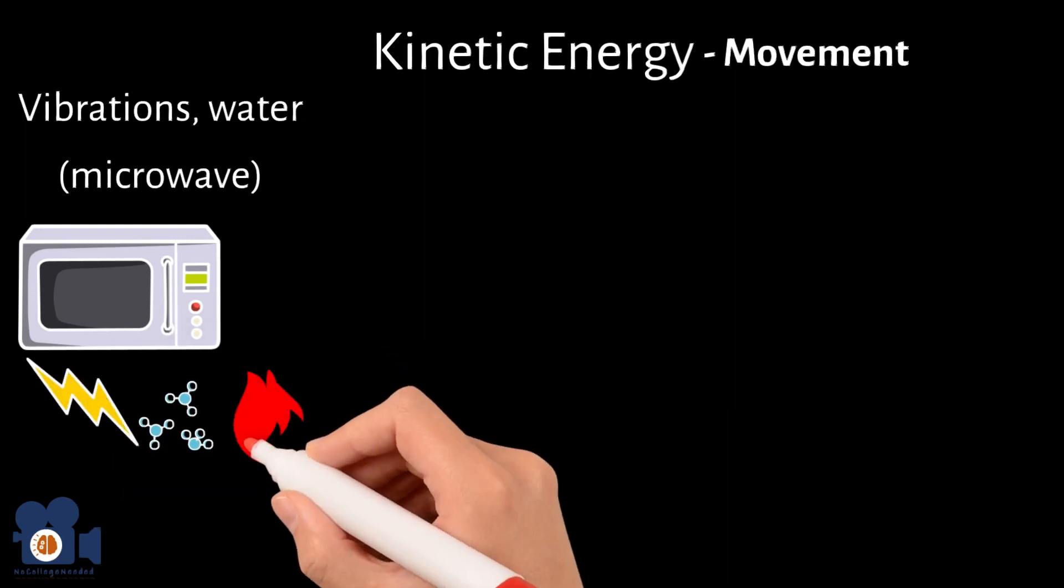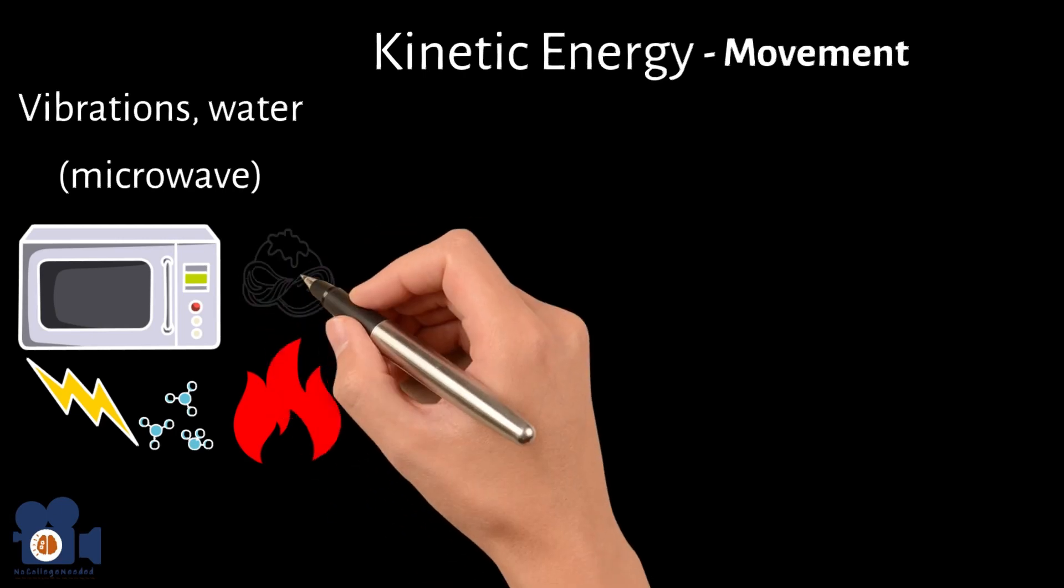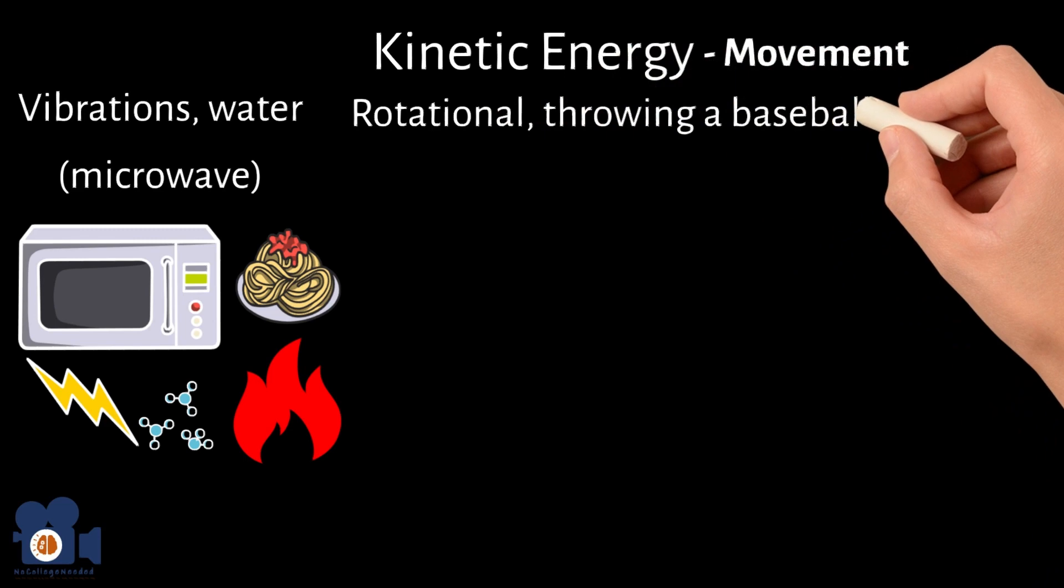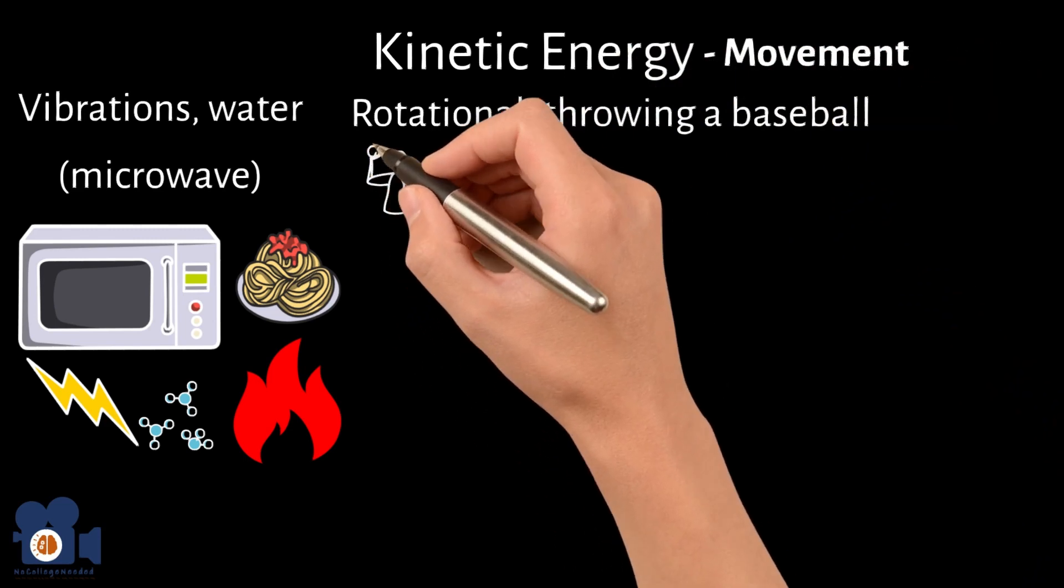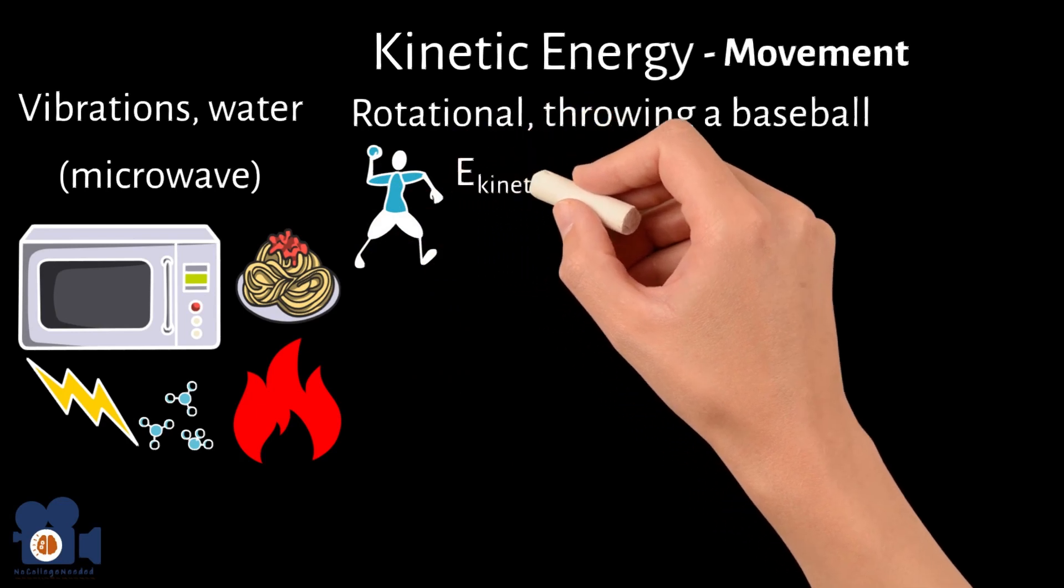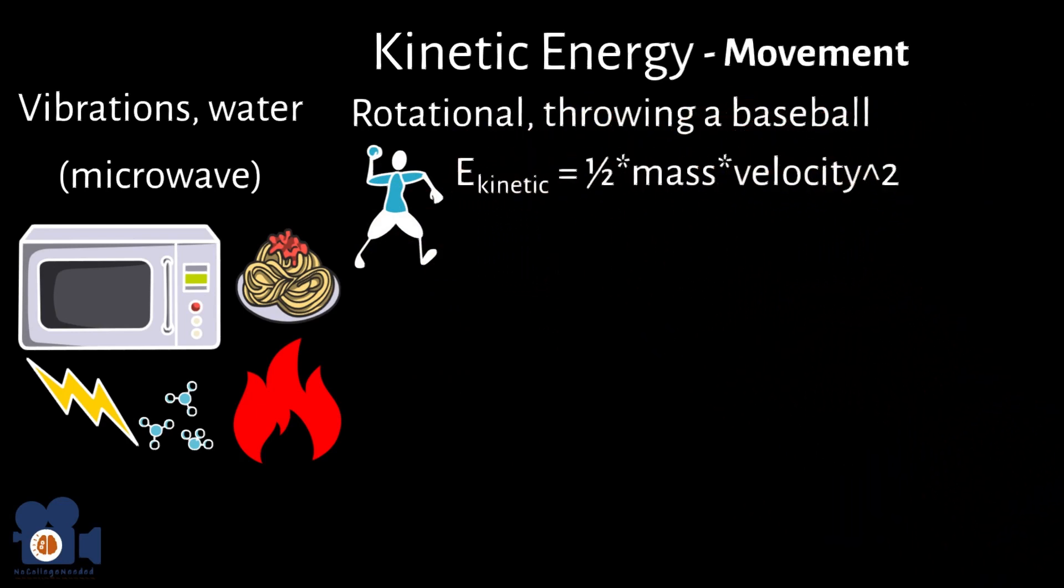The other is rotational movement, like a baseball being thrown. We can measure the amount of kinetic energy an object like a baseball has with the equation E kinetic equals one-half mass times velocity squared.